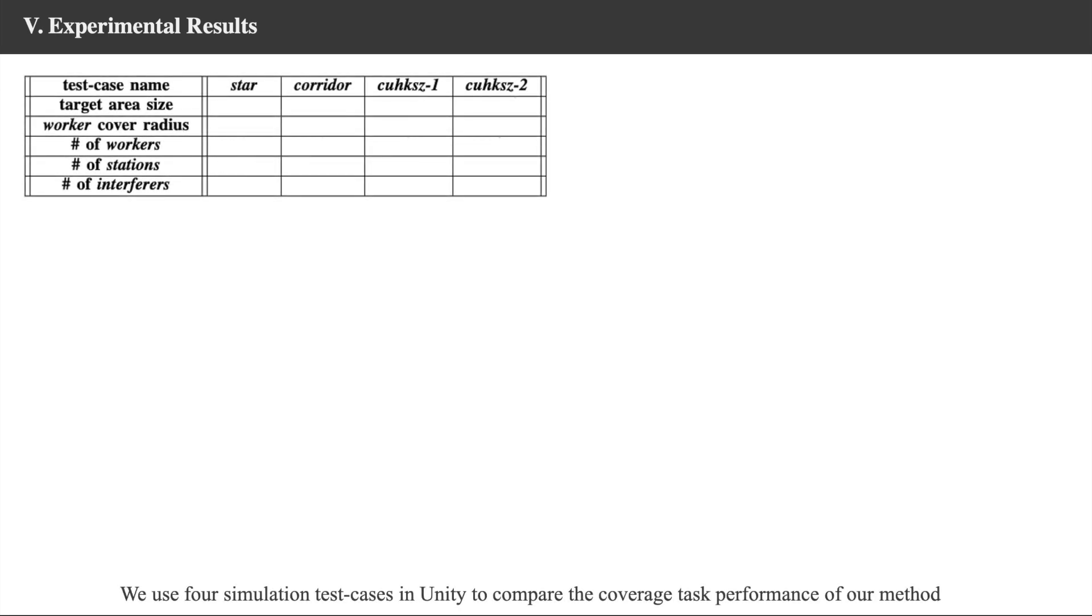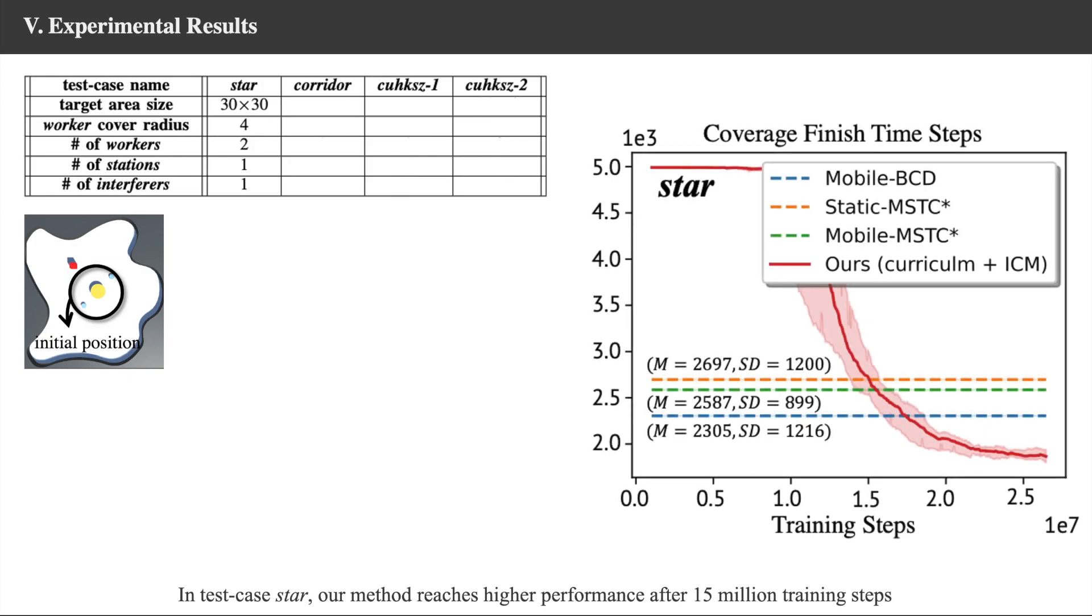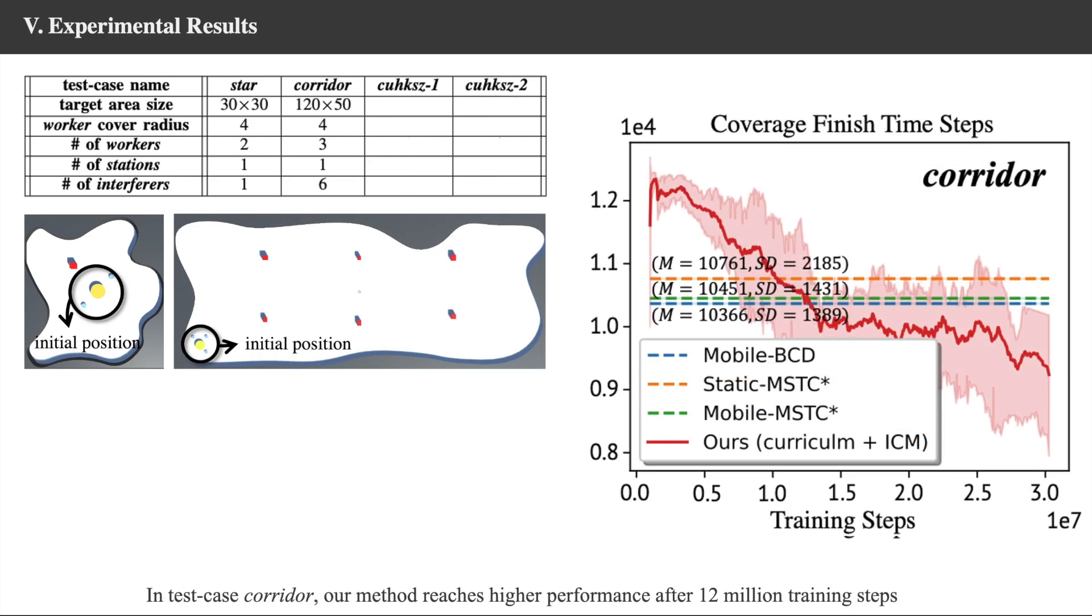We use four simulation test cases in Unity to compare the coverage task performance of our method. In test case star, our method reaches higher performance after 15 million training steps. In test case corridor, our method reaches higher performance after 12 million training steps.